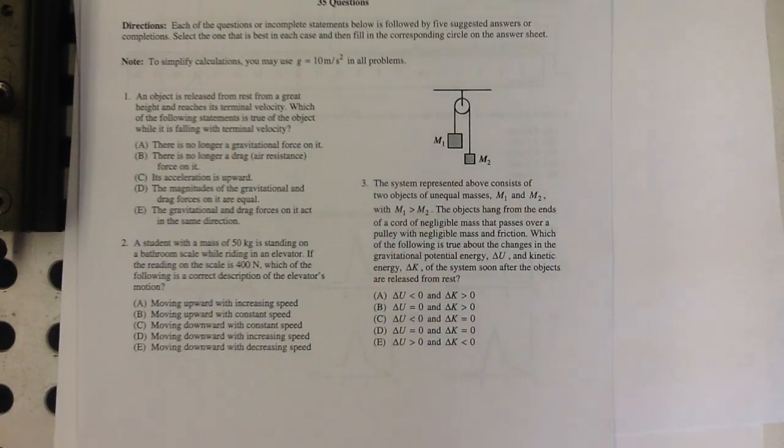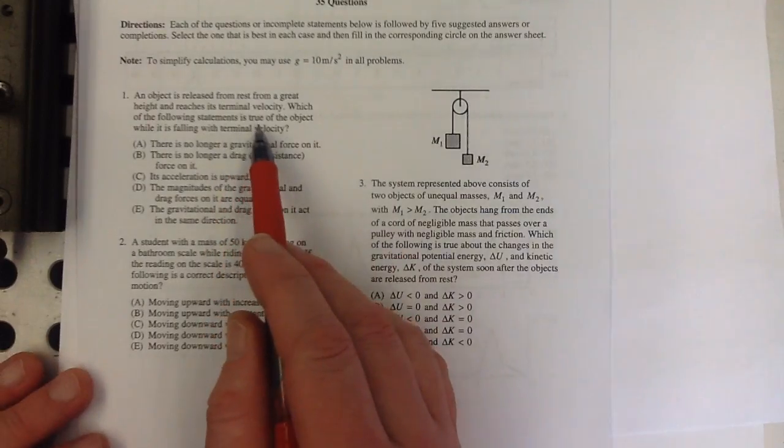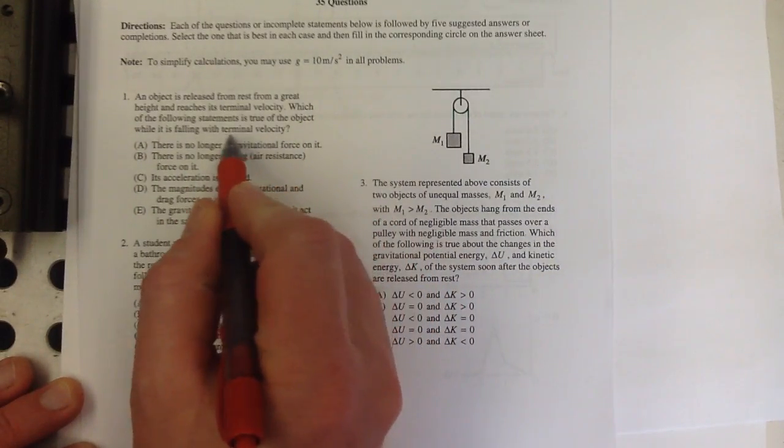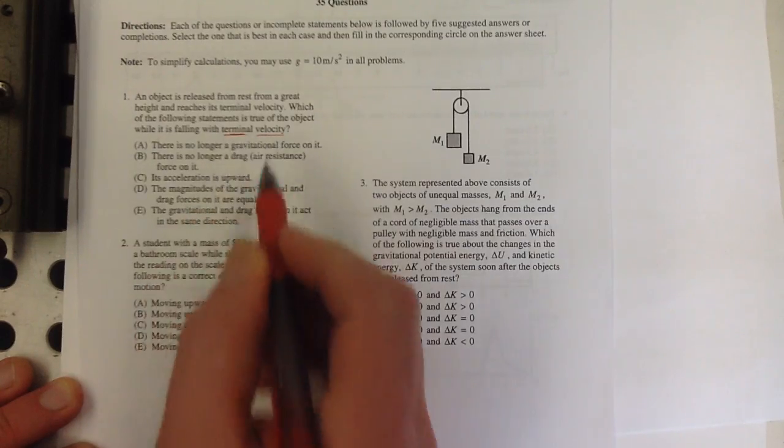Hey! More physics practice. An object is released from rest from a great height and reaches its terminal velocity. Which of the following statements is true of the object while it's falling with terminal velocity? Keep in mind, terminal velocity is a constant velocity.